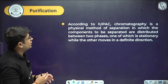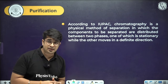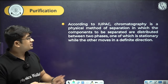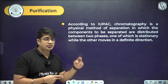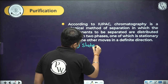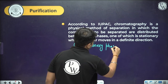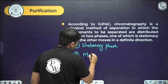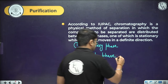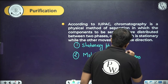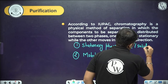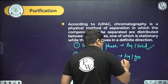According to IUPAC, chromatography is a physical method of separation in which the components are distributed between two phases: a stationary phase and a mobile phase — one stationary while the other moves in a specific direction. Generally, the stationary phase is solid and the mobile phase is a liquid or gas. The mobile phase is the fluid in which the mixture to be separated is dissolved, and the stationary phase is the phase over which the mobile phase passes.